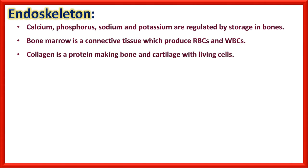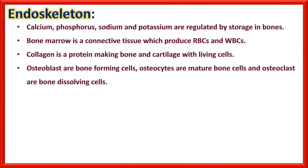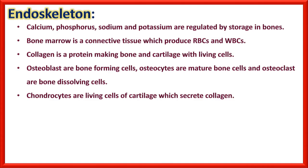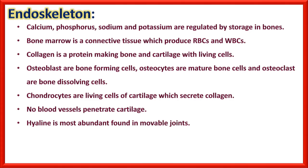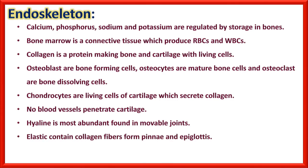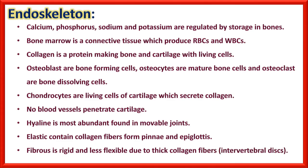Osteoblasts are bone-forming cells, osteocytes are mature bone cells, and osteoclasts are bone-dissolving cells. Chondrocytes are living cells of cartilage which secrete collagen. No blood vessels penetrate cartilage — that is why we can pinch our ears without loss of blood. Hyaline cartilage is most abundant and found in movable joints. Elastic cartilage contains collagen fibers which form the pinna and epiglottis. Fibrous cartilage is rigid and less flexible due to thick collagen fibers, present in intervertebral discs.